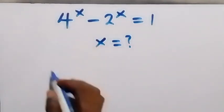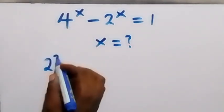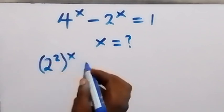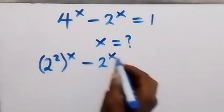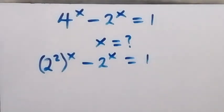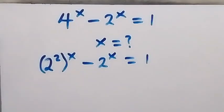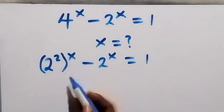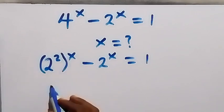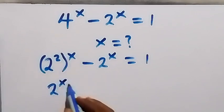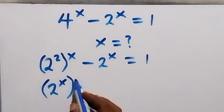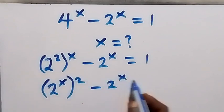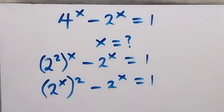Let's write this again as 2 squared, then raised to power x, minus 2 raised to power x equals to 1. Then from the law of indices, we multiply the powers. This becomes 2 raised to power 2x, or we can write it as 2 raised to power x, then squared, minus 2 raised to power x, which equals to 1.